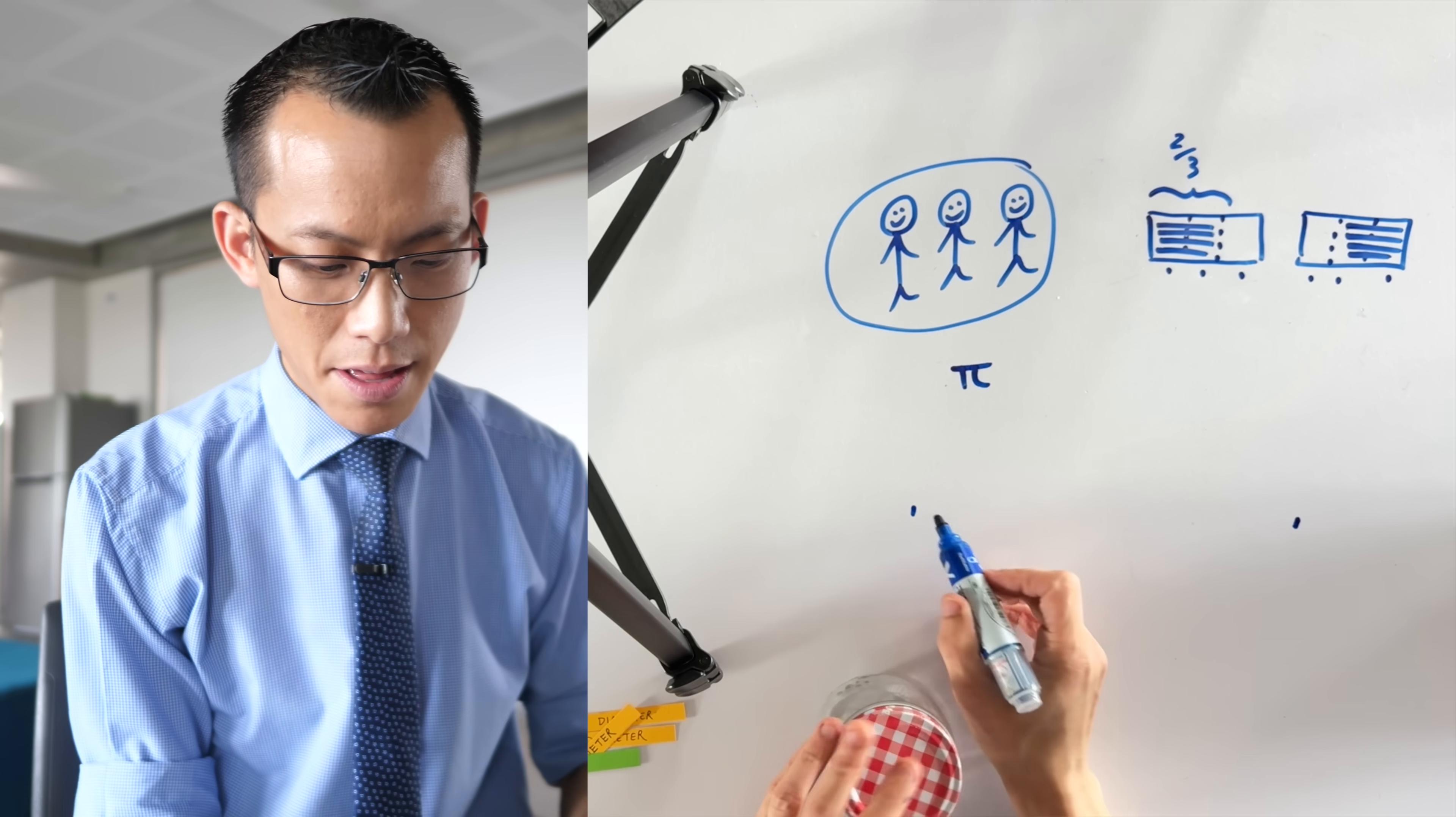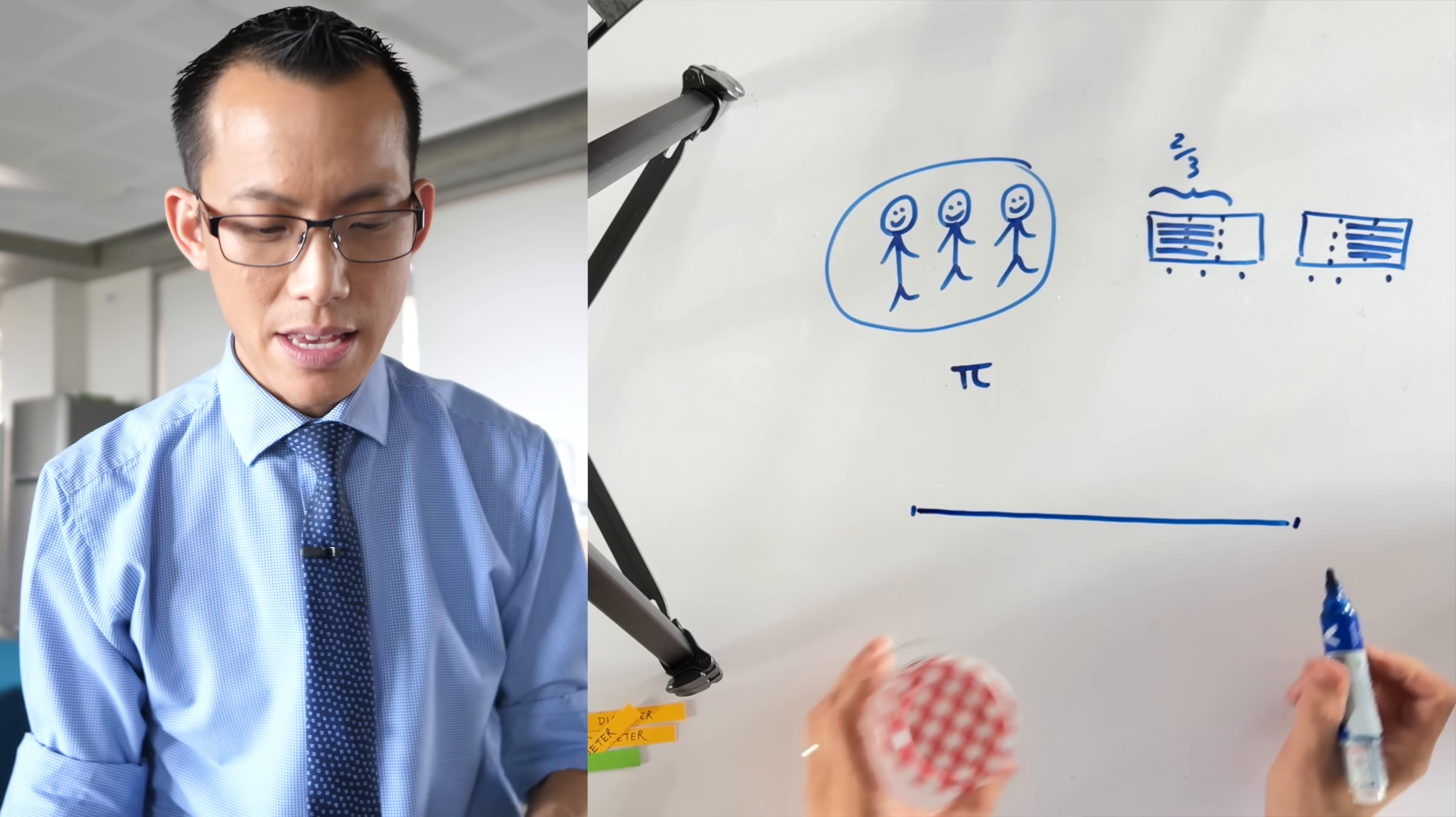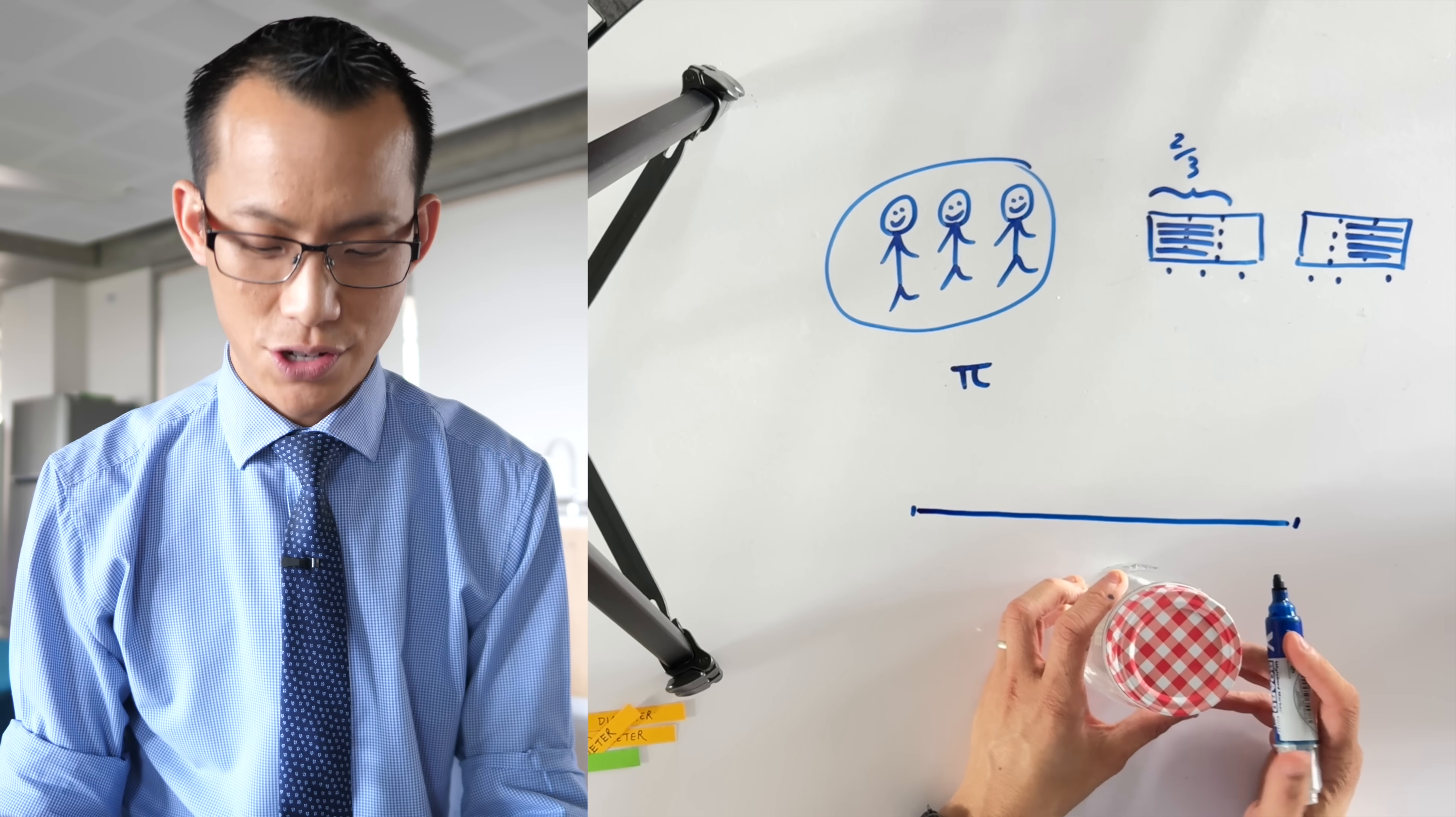So I'm going to mark that out on the table like so here to here. So this distance here is the circumference of this jar.